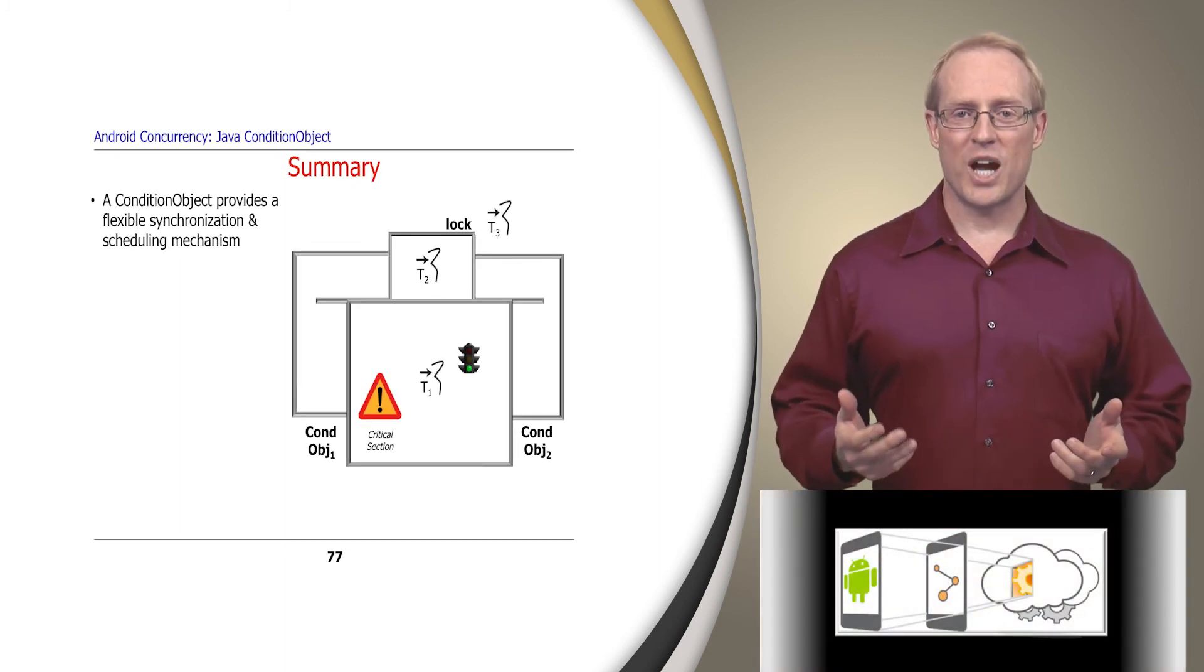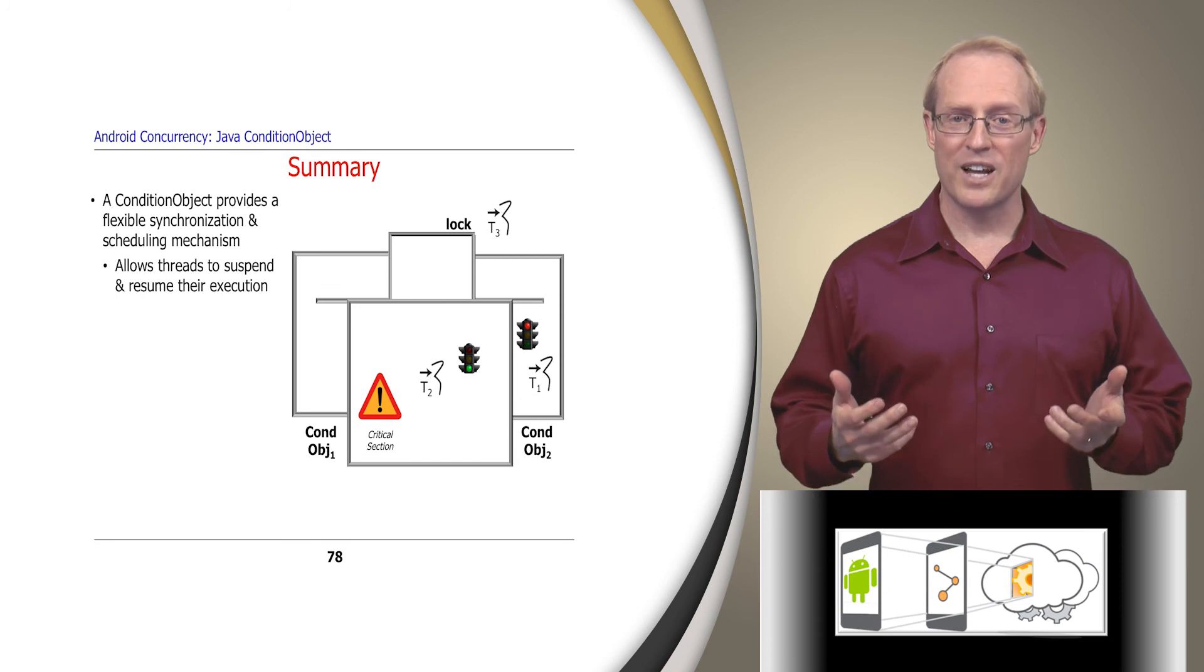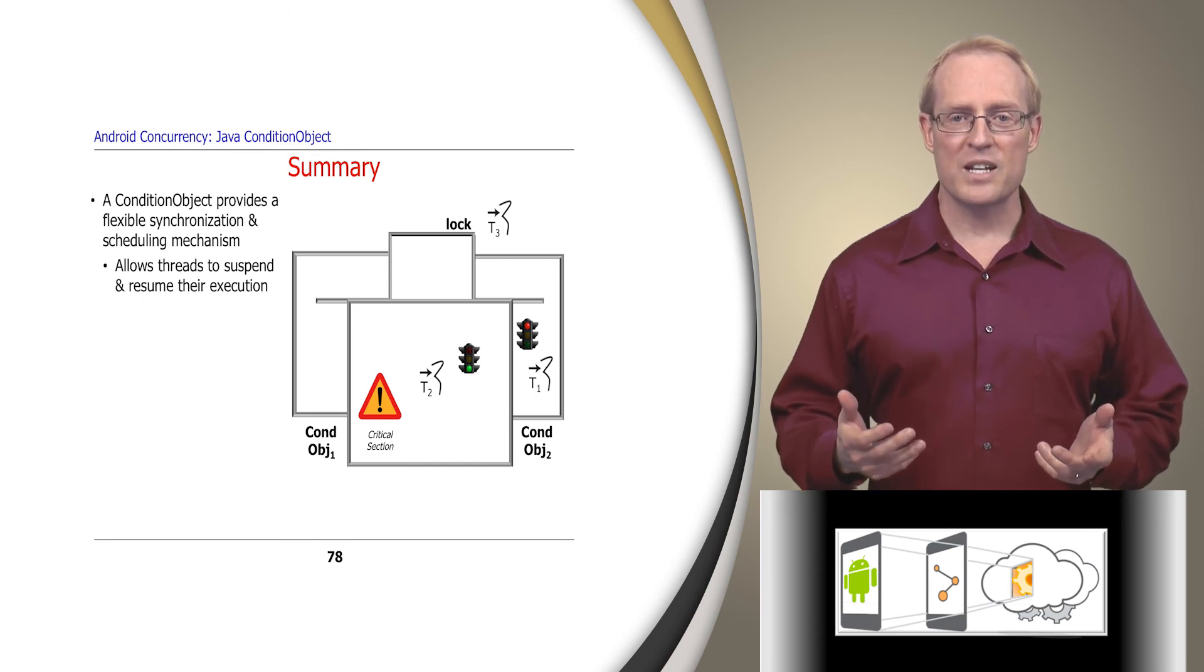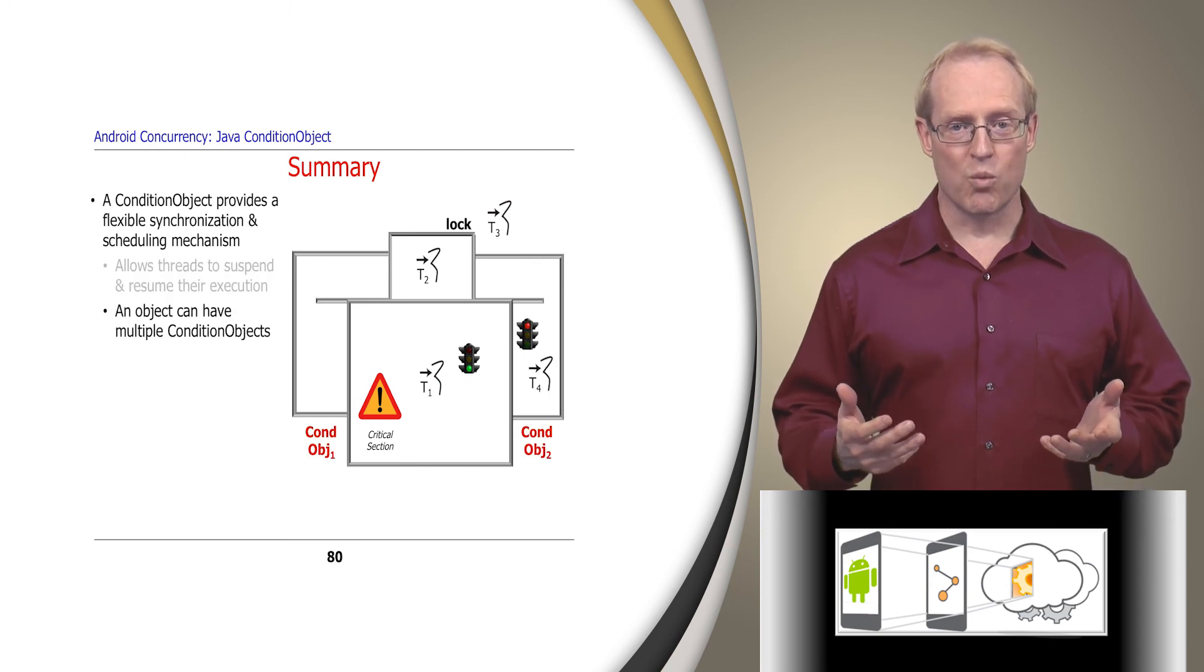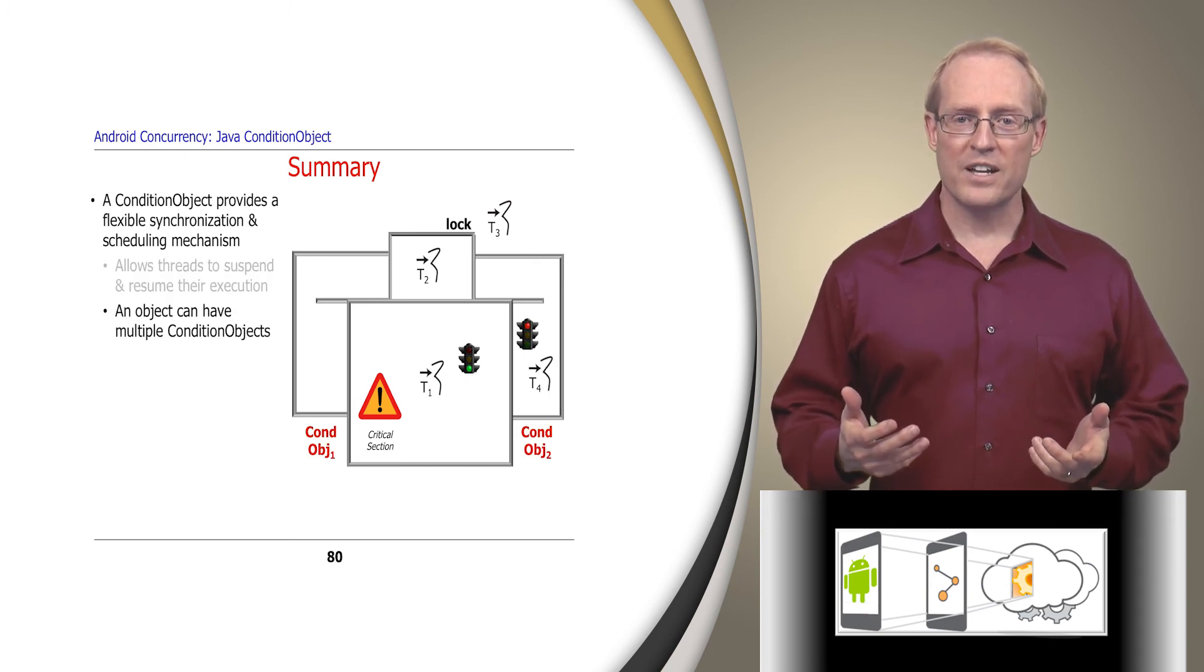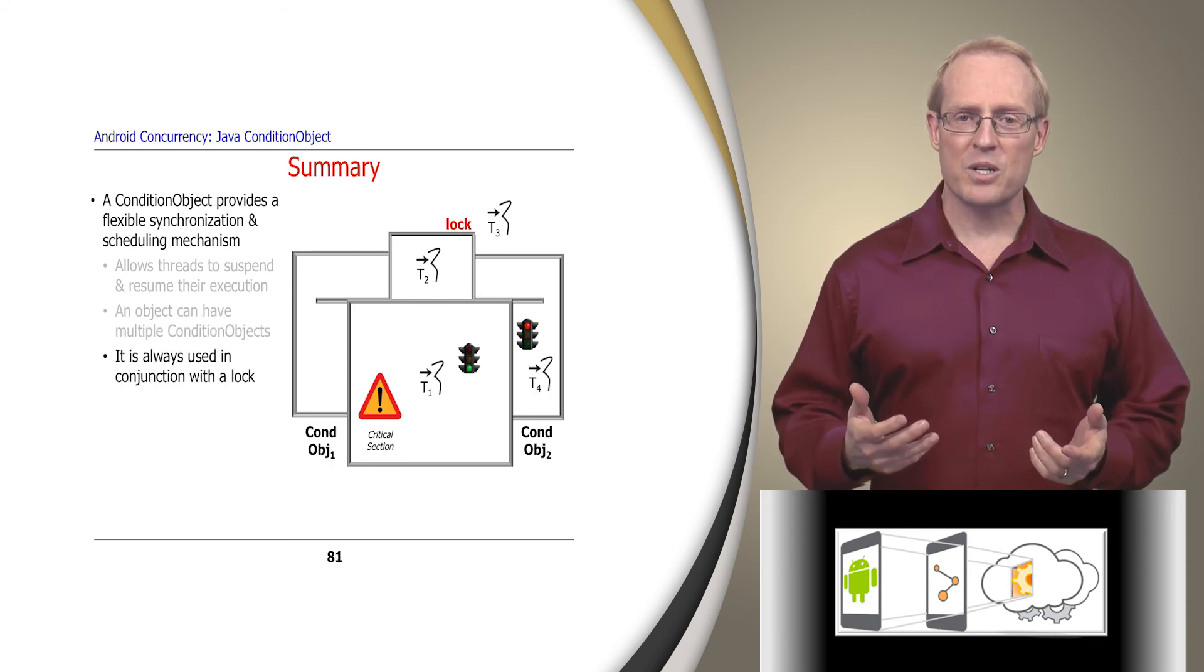In summary, a Java condition object provides a flexible synchronization and scheduling mechanism that allows a thread to suspend its execution until it's notified by another thread that some shared state it's waiting on may now be true. Unlike built-in Java monitor objects, which can only have one wait queue, a user-defined Java object can create multiple condition objects. A condition object is always used in conjunction with a lock, such as a reentrant lock, to ensure state shared by multiple threads is protected from race conditions.